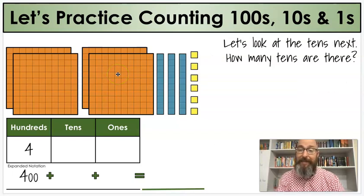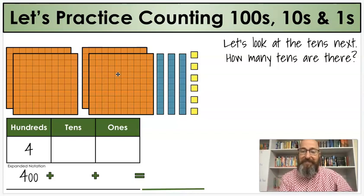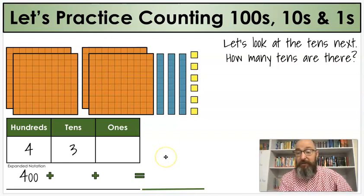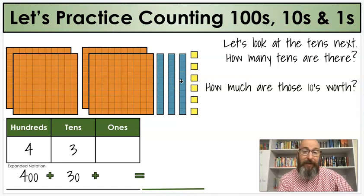Next, let's look at the tens. How many tens are there? 3 is correct. You see those here. 1, 2, 3. And, of course, if we count by tens three times, count by tens, 10. We know we would have 30.